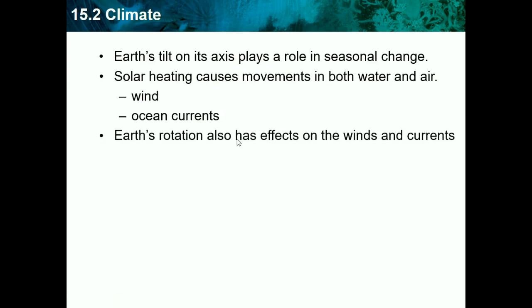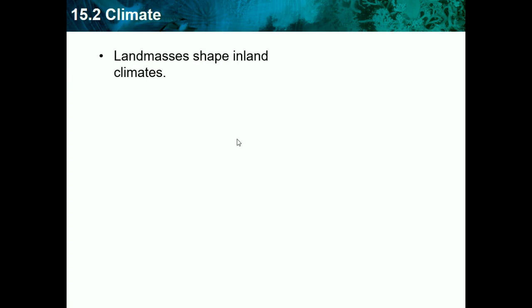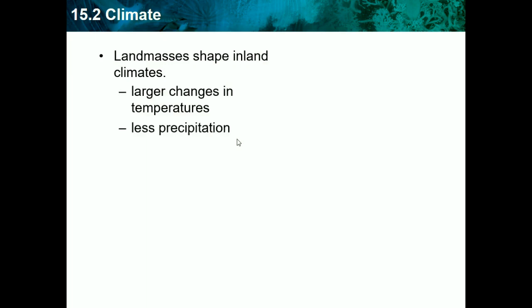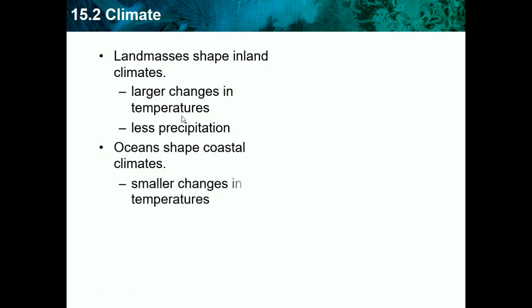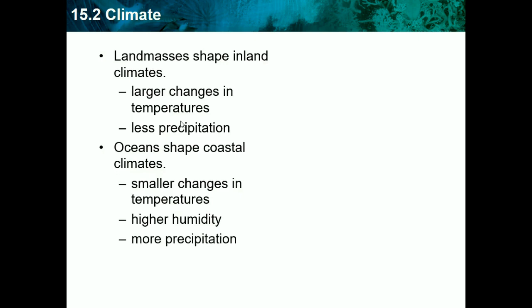Land masses shape inland climate. If you're surrounded by all land, you'll have larger changes in temperature and less precipitation, because the ocean isn't there to produce clouds when water evaporates. Oceans shape coastal climates with smaller changes in temperature, because water has high specific heat — it's harder for water to get cold or hot very quickly. There's higher humidity because there's more water vapor in the atmosphere, and more precipitation because the water is right there to be evaporated and turned into clouds.